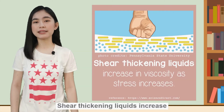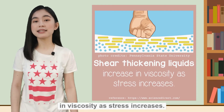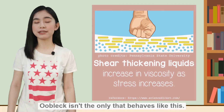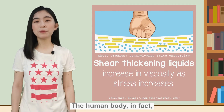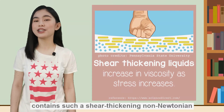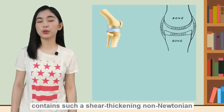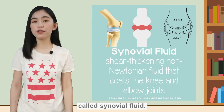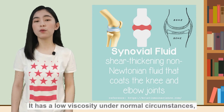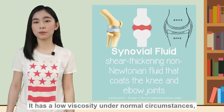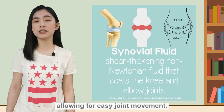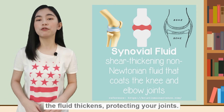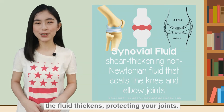Shear thickening liquids increase in viscosity as stress increases. Ooblick isn't the only substance that behaves like this. The human body, in fact, contains a shear thickening non-Newtonian fluid that coats the knee and elbow joints called synovial fluid. It has a low viscosity under normal circumstances, allowing for easy joint movement. However, when you smack your knee or elbow, the fluid thickens, protecting your joints.